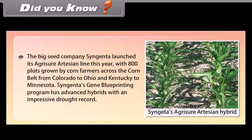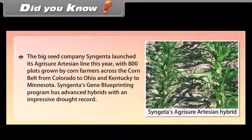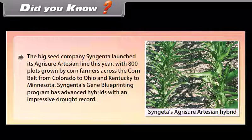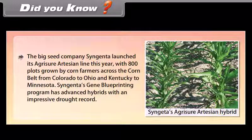Did you know? The big seed company Syngenta launched its Agritio artesian line with 800 plots grown by corn farmers across the corn belt from Colorado to Ohio and Kentucky to Minnesota. Syngenta's gene blueprinting program has advanced hybrids with an impressive drought record.